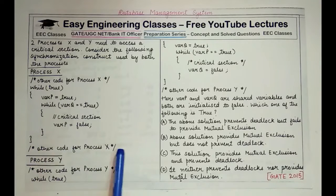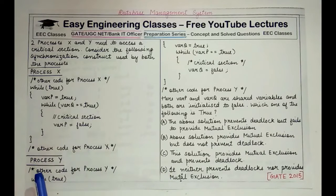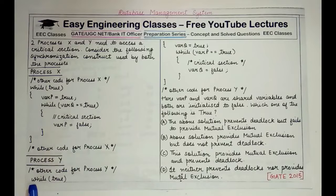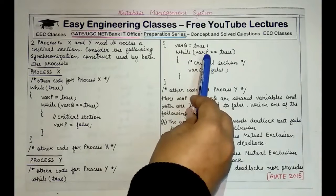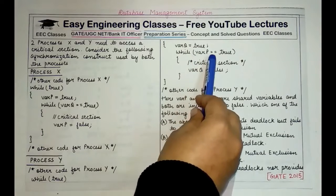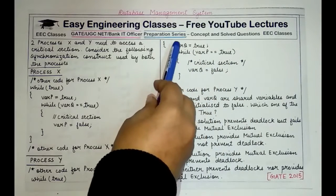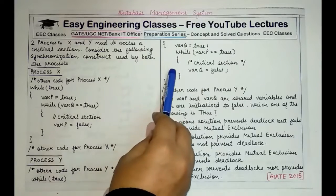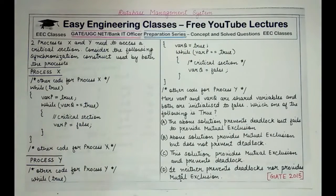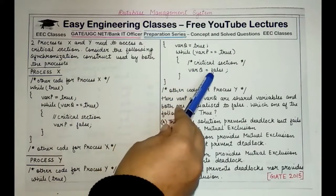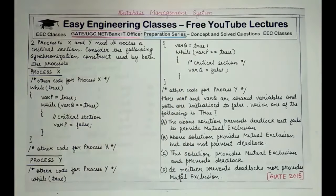Process Y has a similar structure: an outer while(true) loop, inside which var_q is set to true, followed by an inner while loop checking if var_p equals true. If var_p is true, Process Y enters its critical section, and after completing it, sets var_q equal to false.